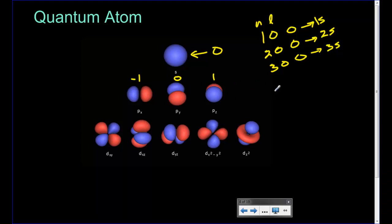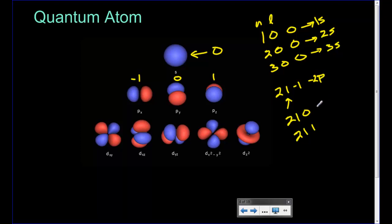In the first energy level we don't have any P orbitals, so we start in the second: quantum numbers 2, 1, negative 1 or 2, 1, 0 or 2, 1, 1. Those are the quantum numbers for the 2P orbitals — we could say 2P1 for one electron, 2P2 for two, up to 2P6 for a total of six electrons across the three P orbitals.